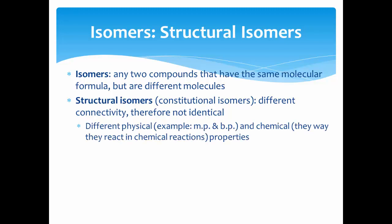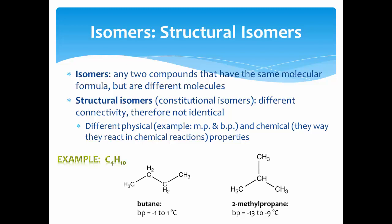Structural isomers have different physical and chemical properties, for example melting point and boiling point and the way they react in chemical reactions. For example, both butane and 2-methylpropane have the molecular formula C4H10. However, they have different bond connectivities as you can see. This means they are structural isomers.